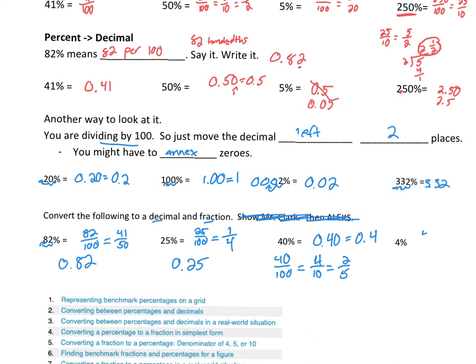Four percent is four per hundred. We can divide both of those by four. Which gives us one-twenty-fifth. Four percent is four-hundredths. Not this. That's four-tenths. Four-hundredths.